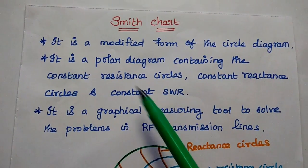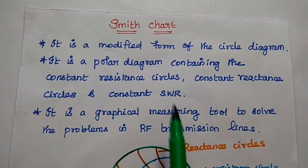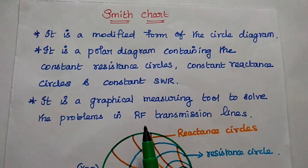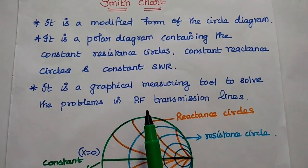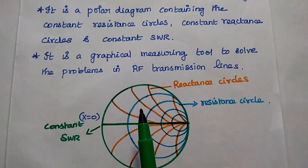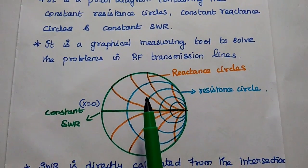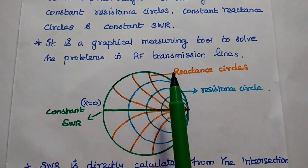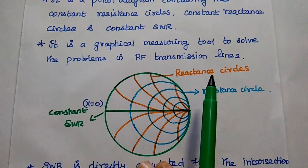Dear students, Smithchart is a modified form of the circle diagram. It is a polar diagram containing constant resistance circles, constant reactance circles, and constant SWR. SWR means standing wave ratio.